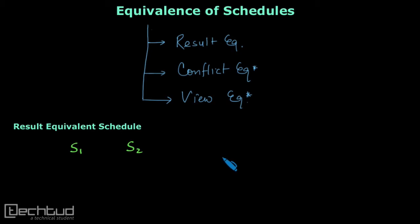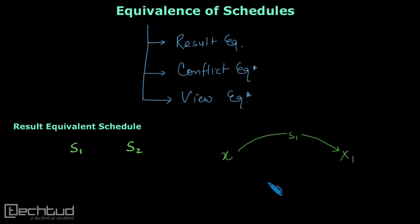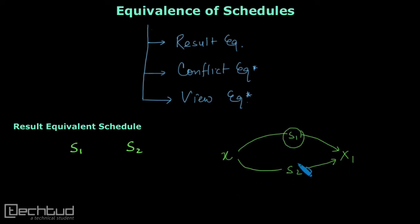What I mean by saying this: let us say there is a variable X. If schedule S1 works on variable X and goes to some database state X1, and another schedule S2 also works on the same variable X and leads to the same database state X1, then we say that S1 and S2 are result equivalent because the ultimate result is the same. Let us look at an example.